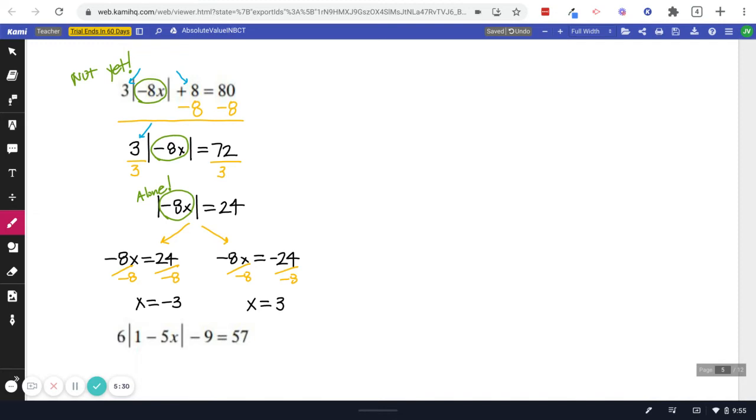So if you look at that, there were steps to do before. The first step, remember, was to isolate the absolute value. So let's just pop over here quick. How do we isolate?